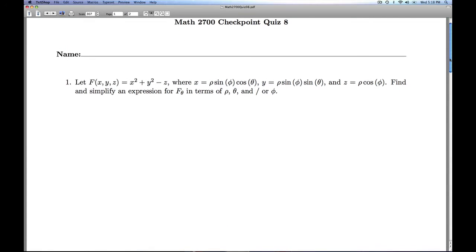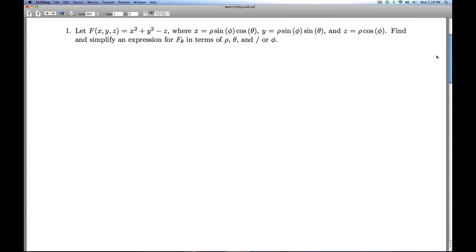Hi folks, this is Calc 3, quiz 8. We're given a function of three variables, and we're given x, y, and z as functions of three new variables. We're asked to find and simplify an expression for f_theta in terms of rho, theta, and or phi.